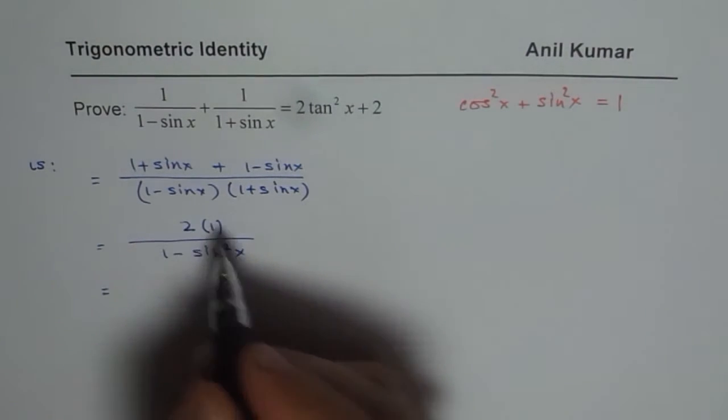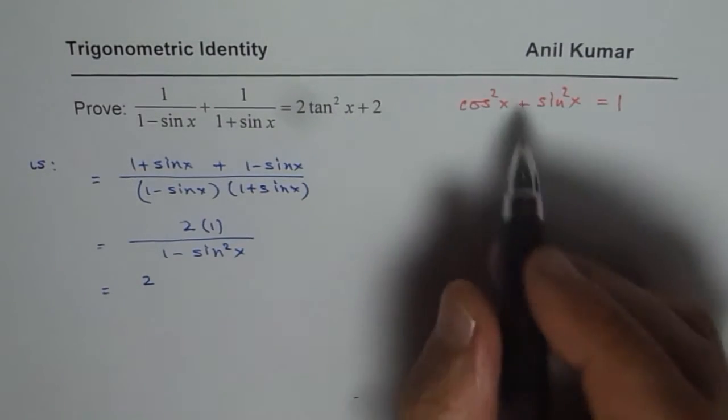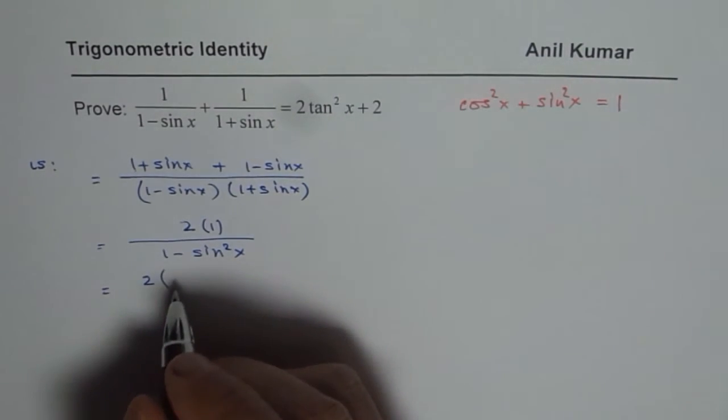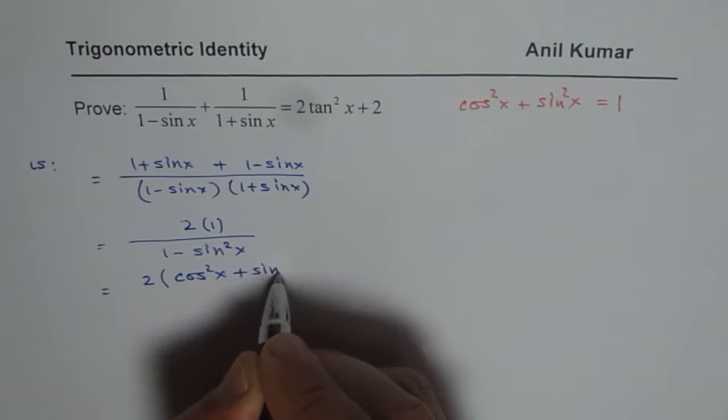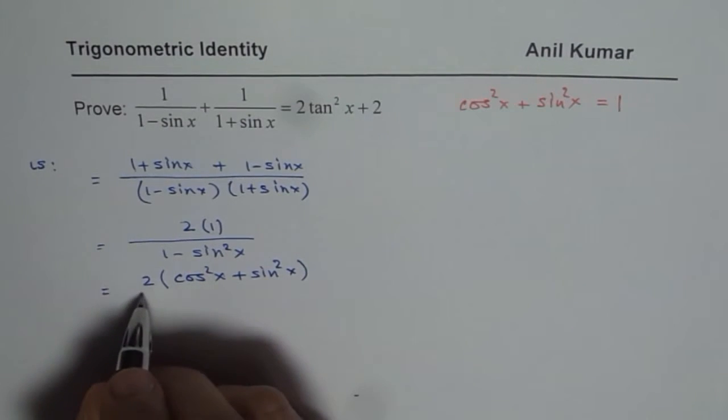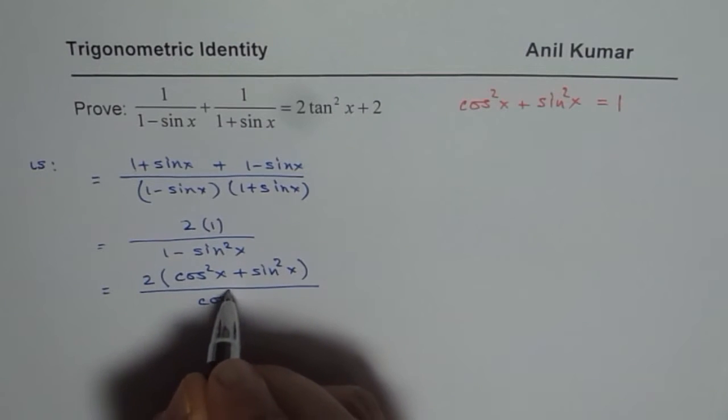2 times 1 is 2. So we could always multiply by this number. That is the strategy which we are going to use in many trigonometric identities. So it is cos square x plus sin square x. And in the denominator, 1 minus sin square x is cos square x.